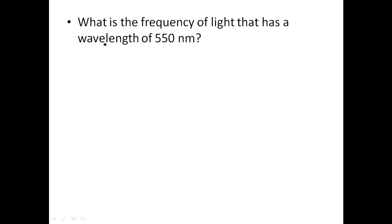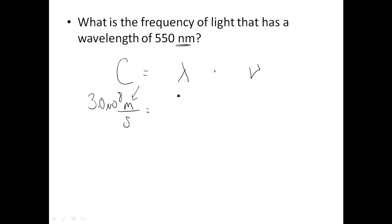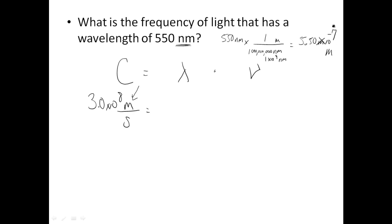Next problem. It says what's the frequency, and you're given the wavelength. You'll use the speed of light equation: speed of light equals wavelength times frequency. Speed of light is always 3.0 times 10 to the 8th meters per second equals wavelength times frequency. But the wavelength is in nanometers, and I have to put it in meters. So let's start with 550 nanometers times a conversion: put nanometers on the bottom, meters on top. 1 meter equals 1 times 10 to the positive 9th nanometers, so the wavelength converts to 5.50 times 10 to the negative 7th meters.